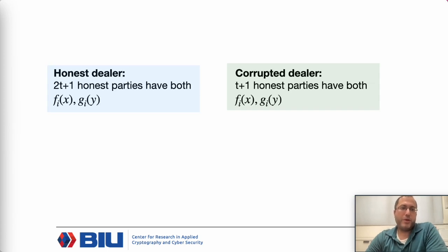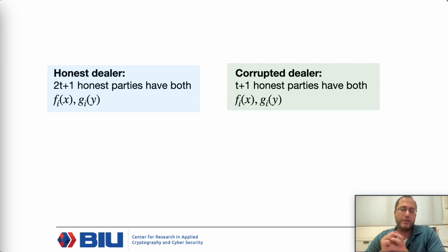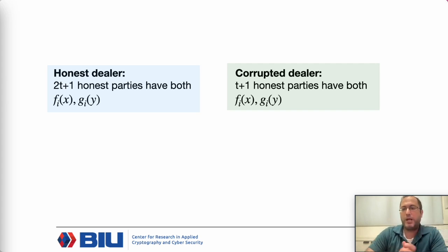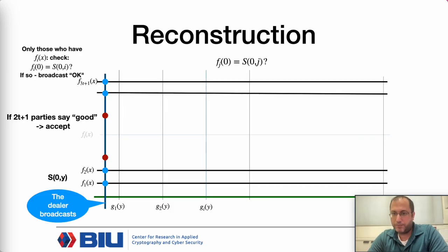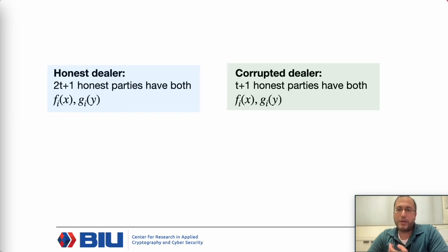If the dealer is honest, the parties will exchange sub-shares, everything will be correct, and the dealer will never need to reveal an honest party's polynomial. At the end, 2t+1 honest parties will have both the f-polynomial and the g-polynomial. When the dealer is corrupted and the shares are accepted, only t+1 honest parties have both f and g, meaning reconstruction requires the help of corrupted parties.